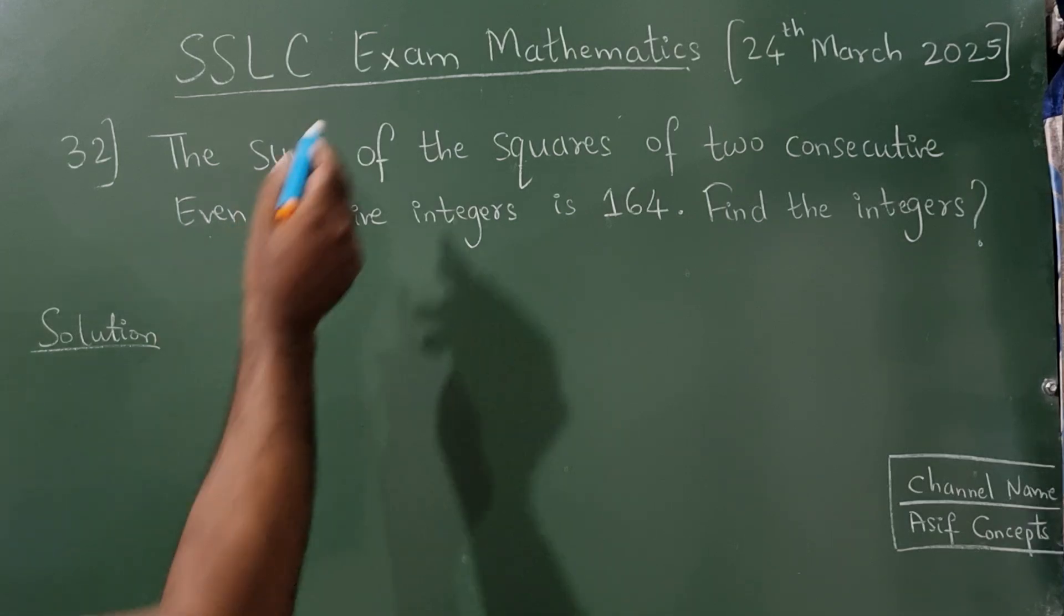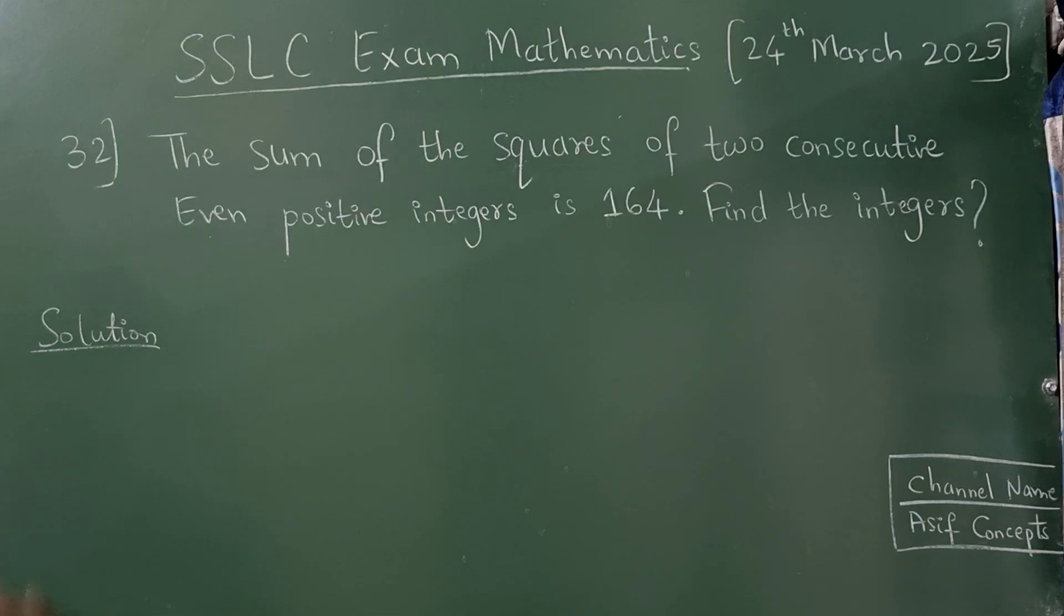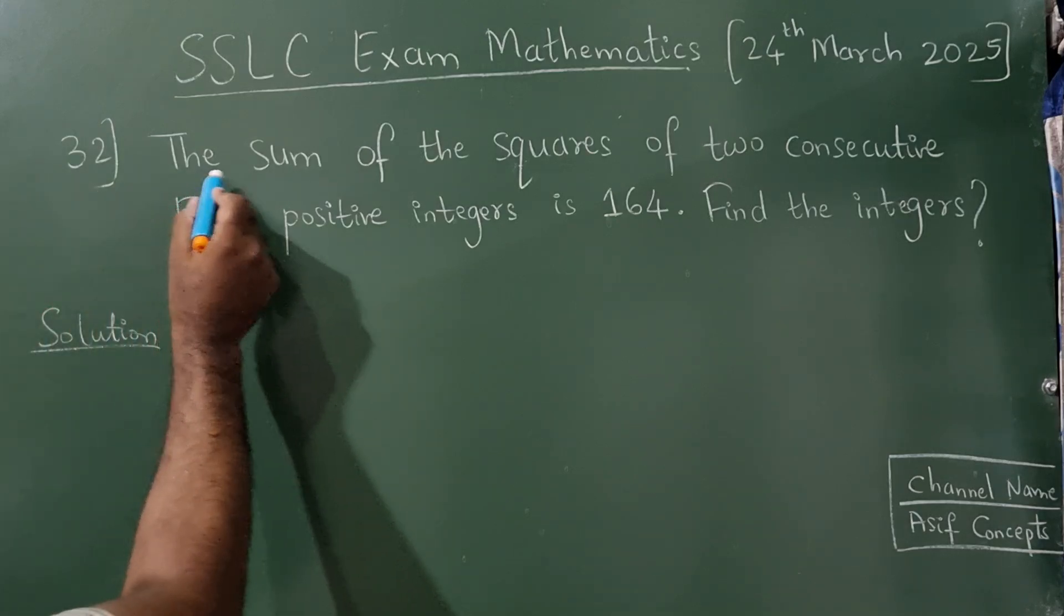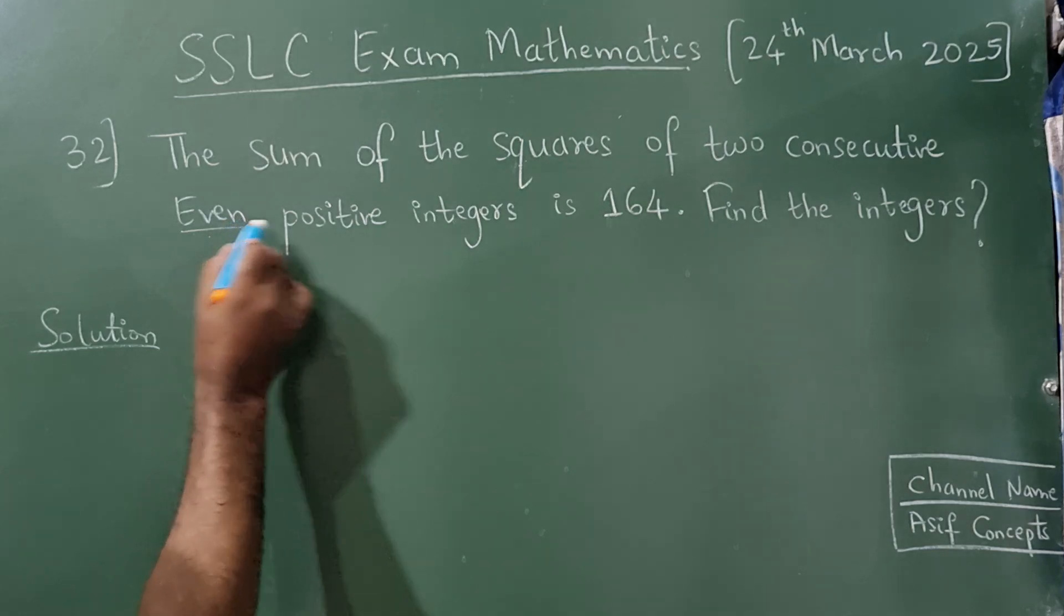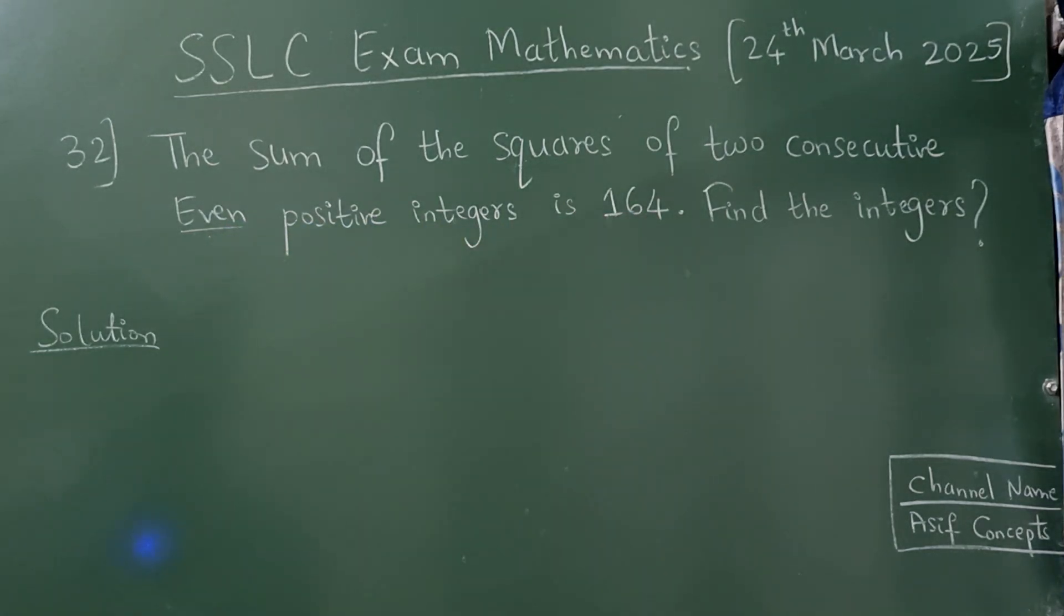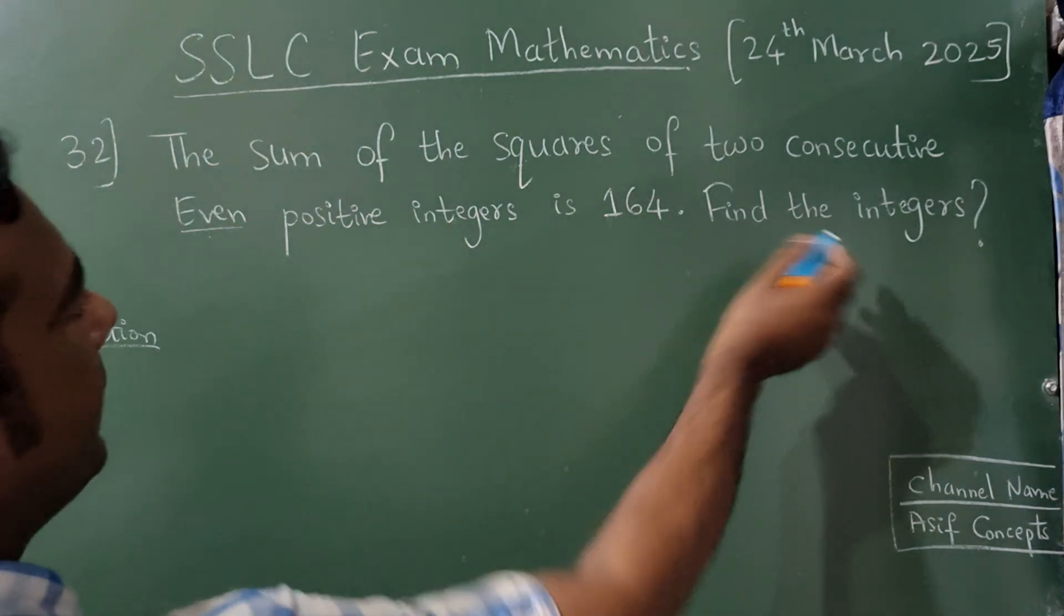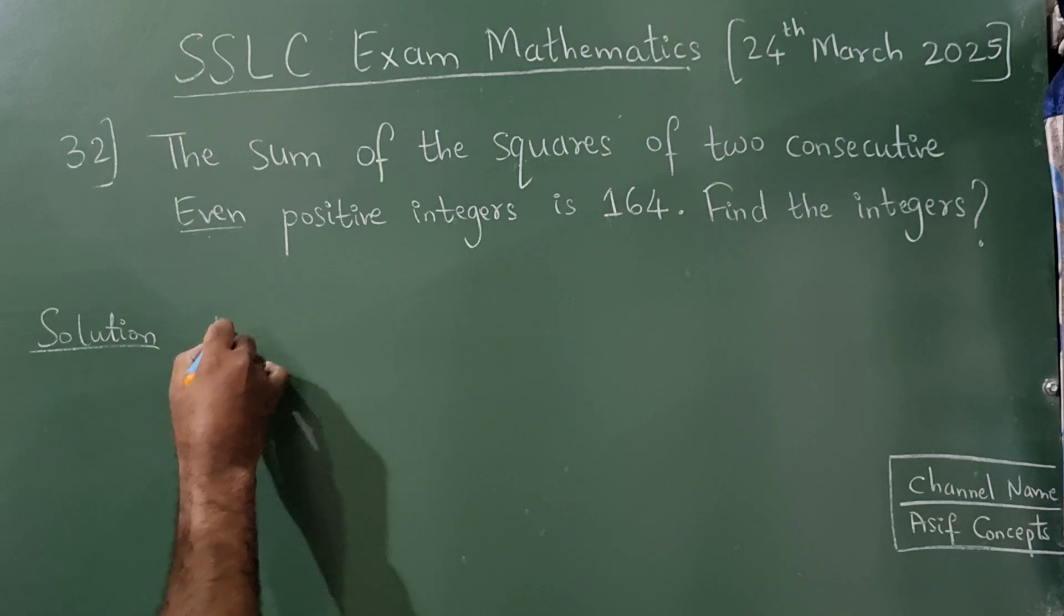This question was asked in the exam for three marks. Question number 32: The sum of the squares of two consecutive even positive integers is 164. Find the integers.